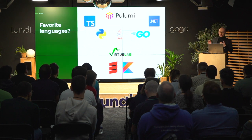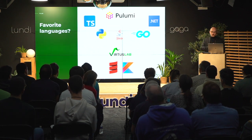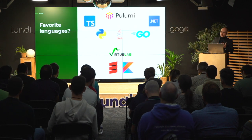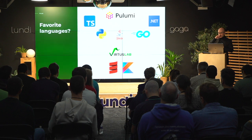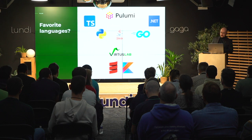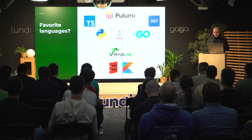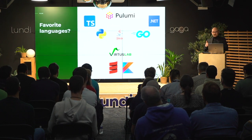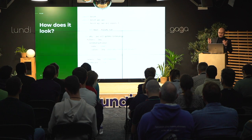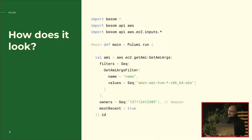Pulumi supports multiple languages: TypeScript, Python, Java, Golang, and the whole .NET ecosystem out of the box. Those are the mainline SDKs offered by Pulumi. VirtusLab also offers two additional SDKs — one for Scala and one for Kotlin.